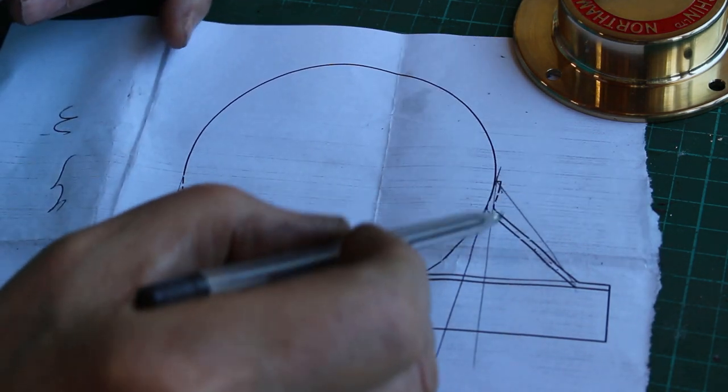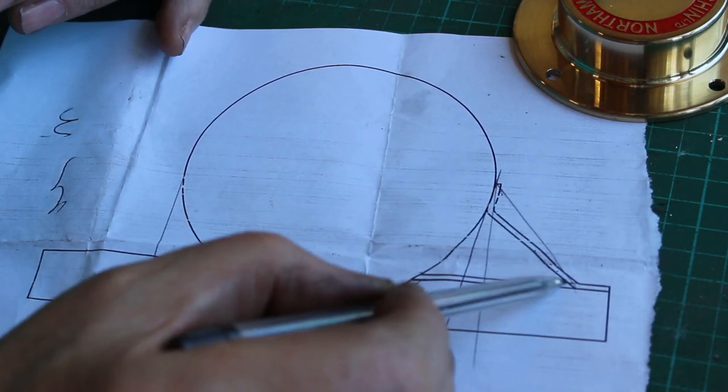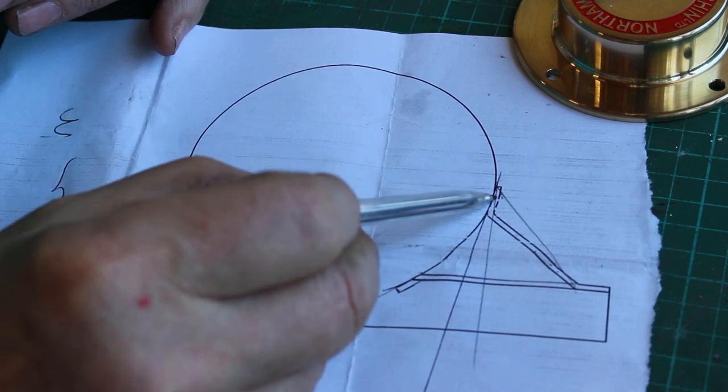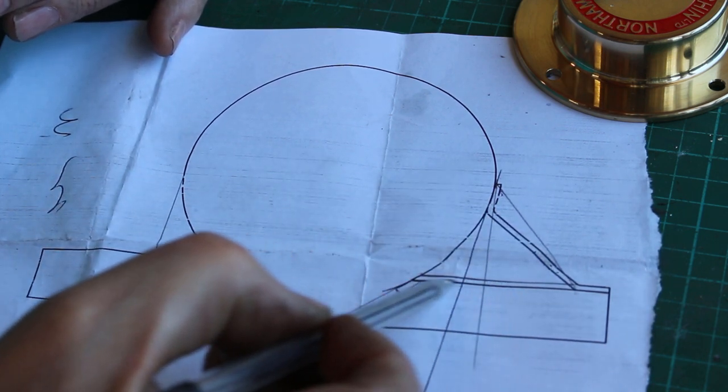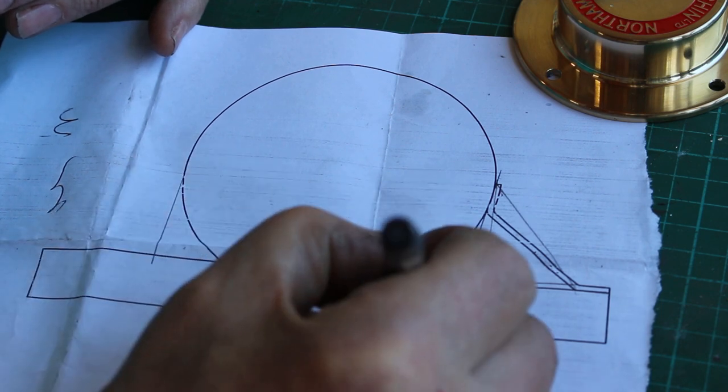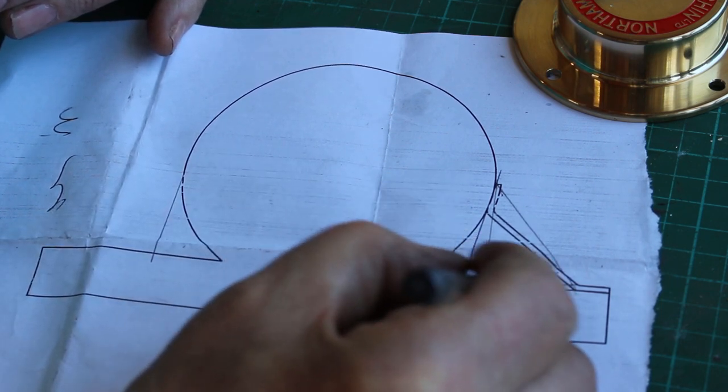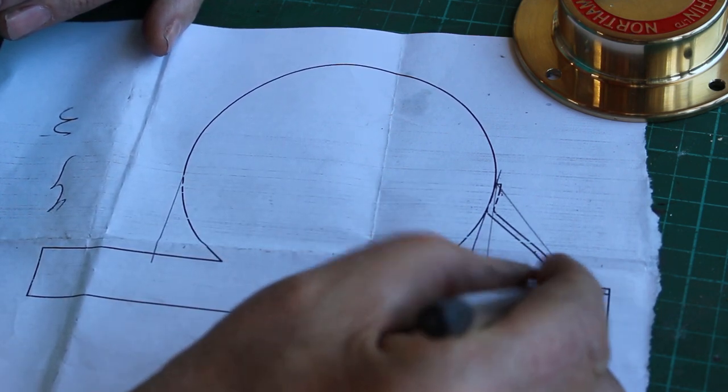So what we're doing today is this bracket here that fits on the boiler barrel, so we have a bracket coming down here and then extending along to here. This becomes our bracket.